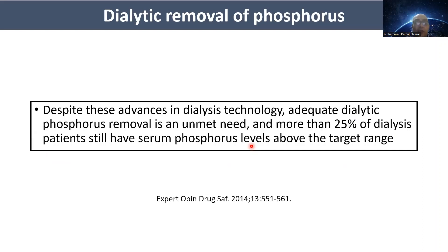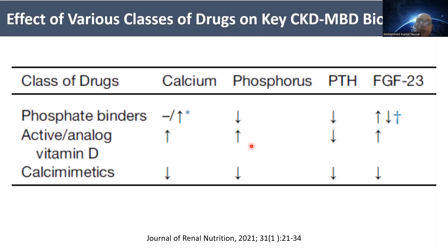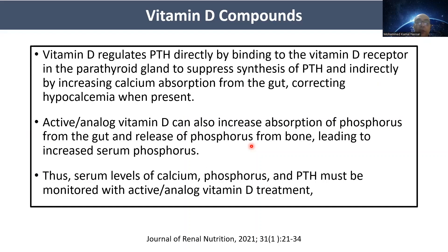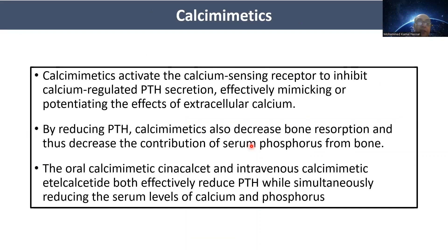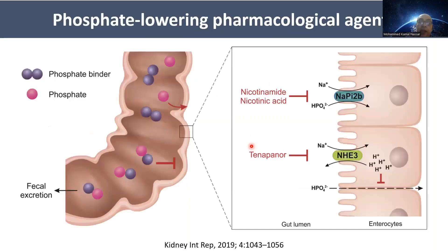The third treatment modality is drug therapy. Drugs acting on phosphorus control include phosphate binders, active vitamin D, and calcimimetics. Care should be taken with vitamin D compounds and regular phosphorus monitoring, as despite reducing PTH, they may increase phosphate absorption. Calcimimetics are also effective for serum phosphorus control, and we will focus on phosphate-lowering pharmacological agents acting in the gastrointestinal tract.